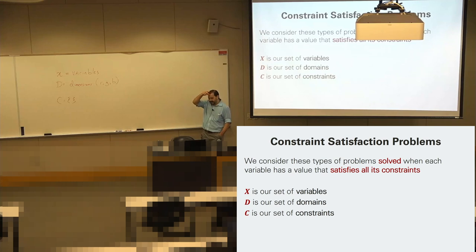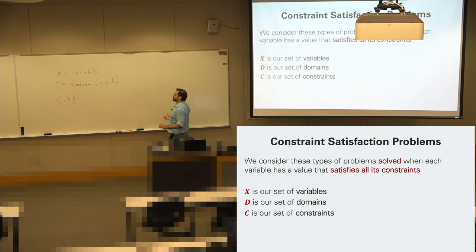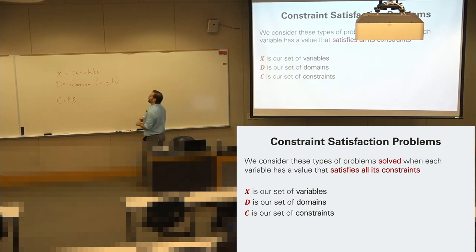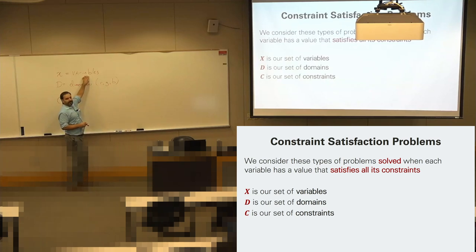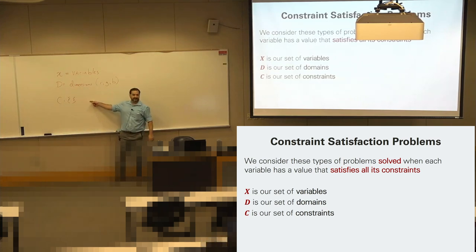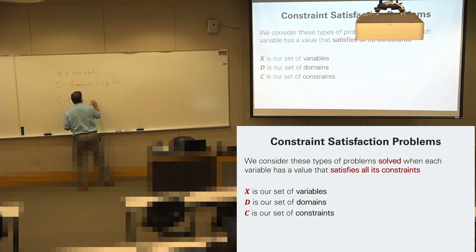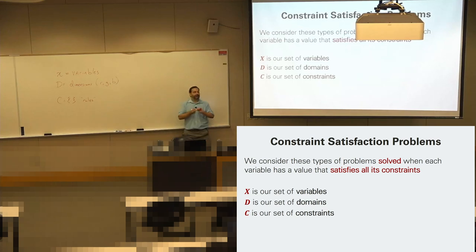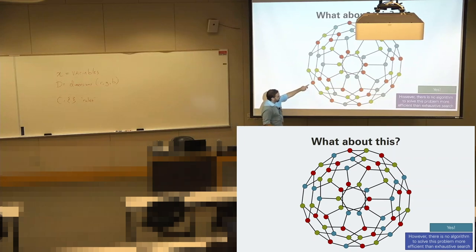We're trying to find some mapping of these domains or dimensions to my variables such that they don't violate any of the rules established within my constraints. That's the idea that none of my neighbors should be matching the same color as me.